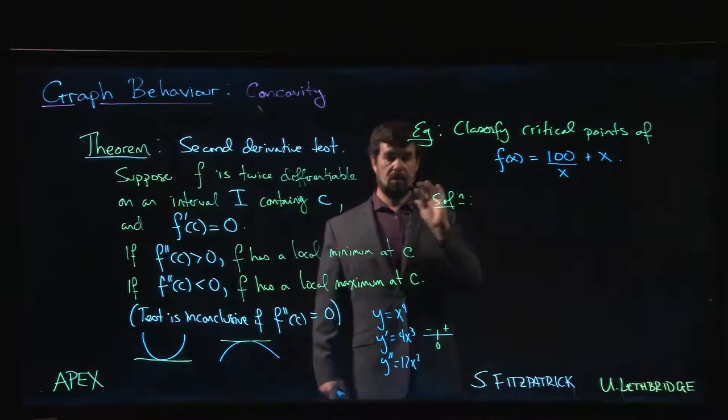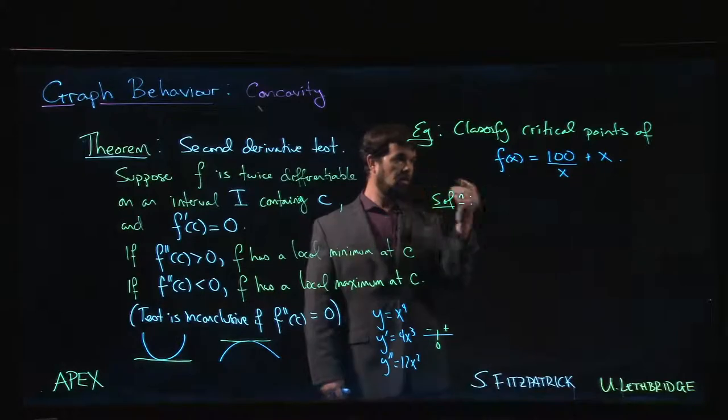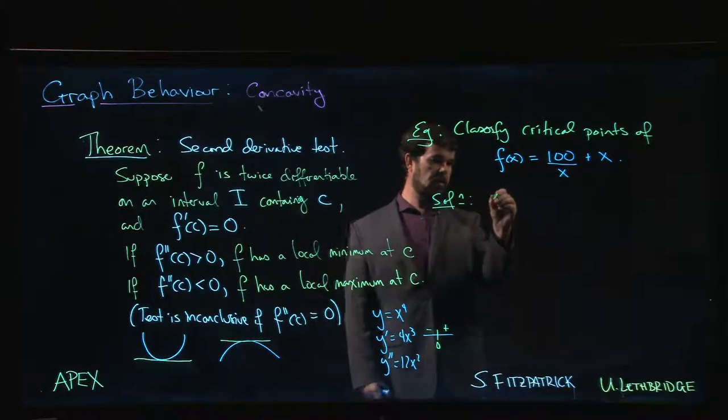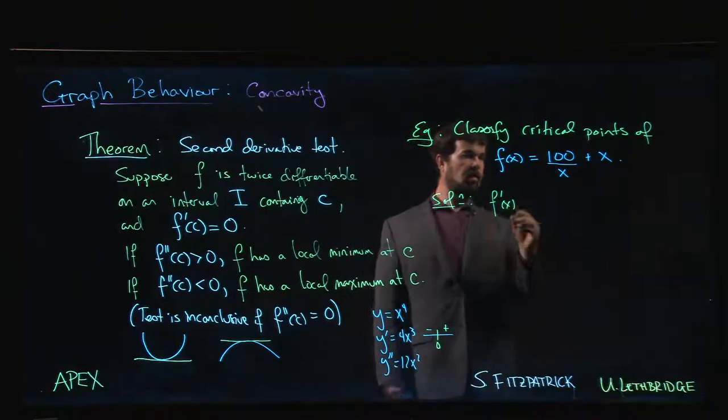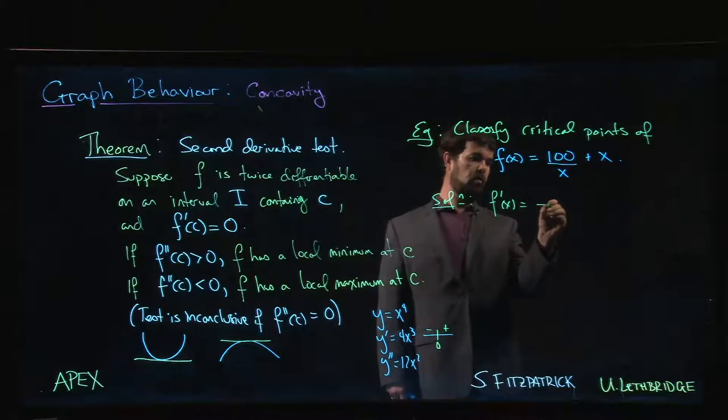First thing we have to do, we still have to do the first derivative because we've got to find those critical points. Find the critical numbers. So f'(x): derivative of 1/x is -1/x², so we have -100/x² + 1.